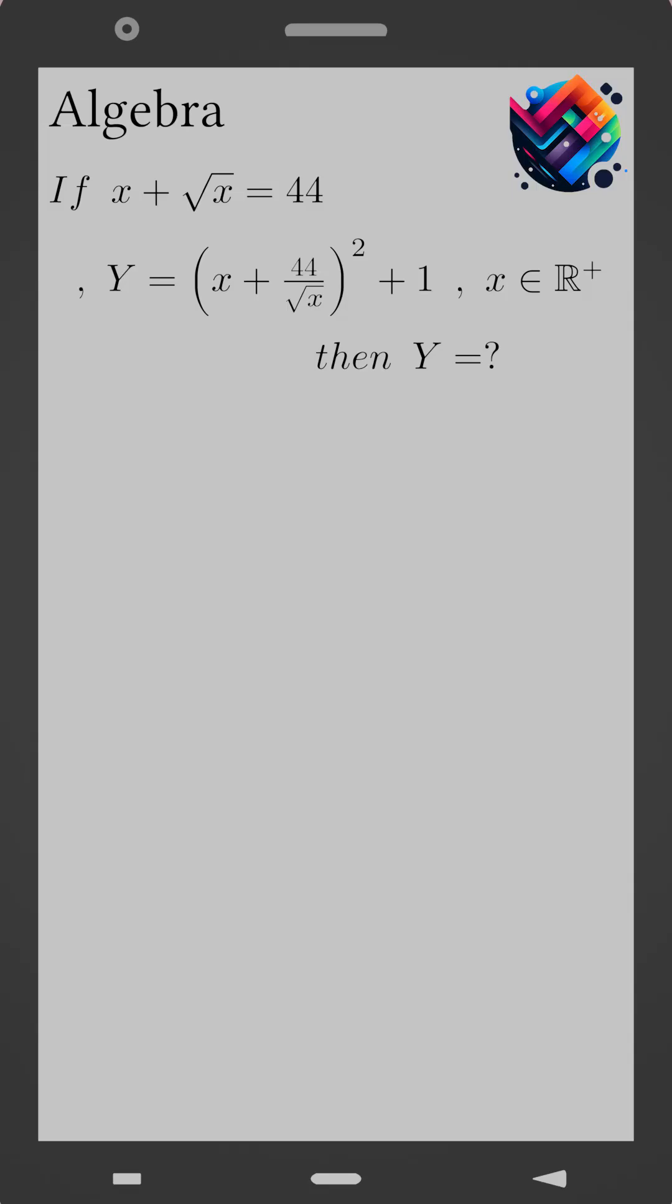We are given that x plus the square root of x equals 44, and Y equals (x plus 44 over the square root of x) all squared plus 1, with x belonging to the positive real numbers. We are asked to find the value of Y.